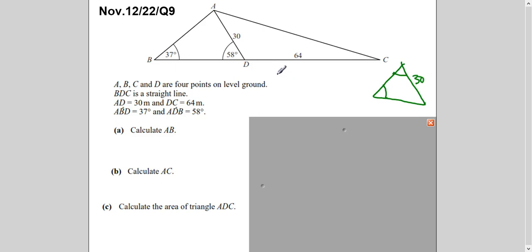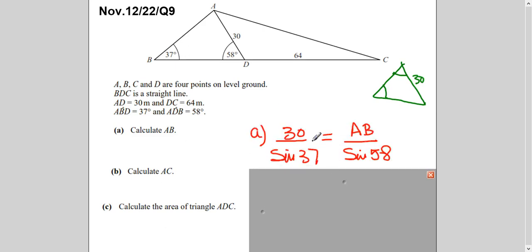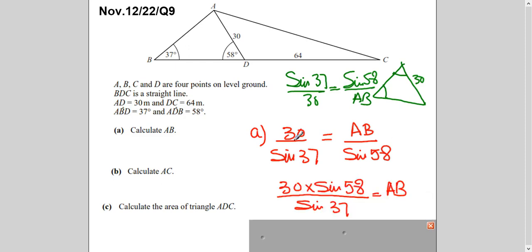So if I write here sine rule, it will be, sine 37, if you see here, 30 over sine 37 is equals to AB over sine 58. If you want to write sine 37 first, there is no problem. So you have to take the ratio of the side with the opposite angle. So there are three sides, I mean three parts we know, one is unknown. So we can easily solve this equation. So cross multiply, it will be 30 times sine 58 divided by sine 37, and we will get the value of the length AB. And this will be in meters, because in the question, it is given in meters.